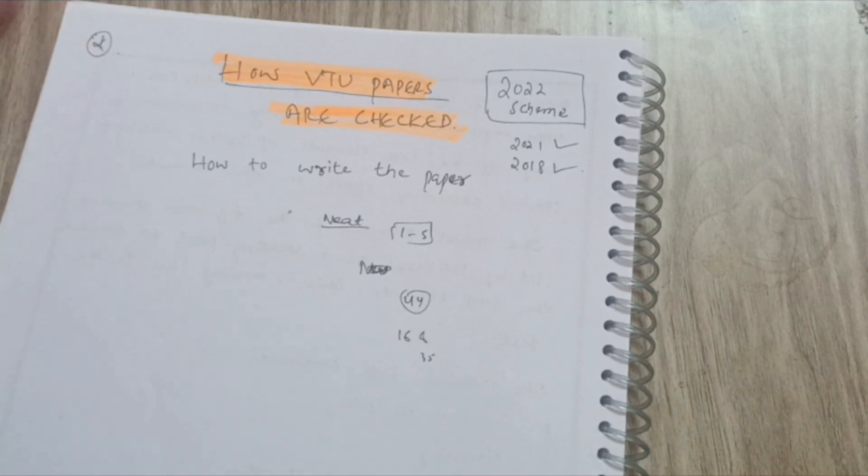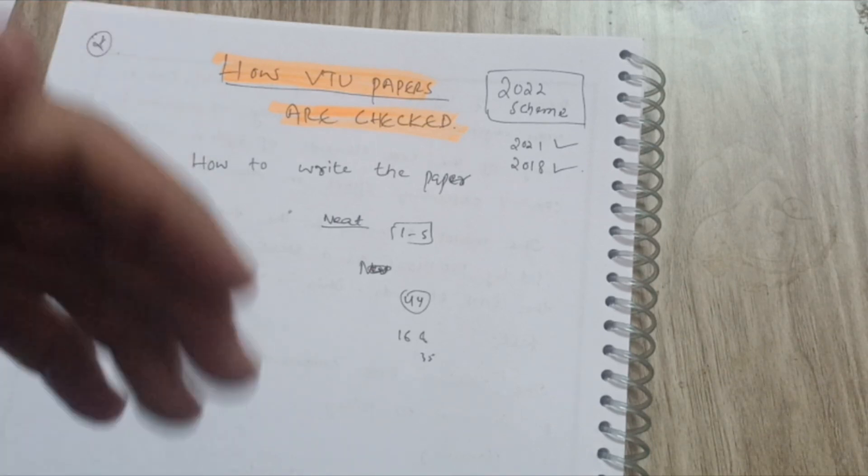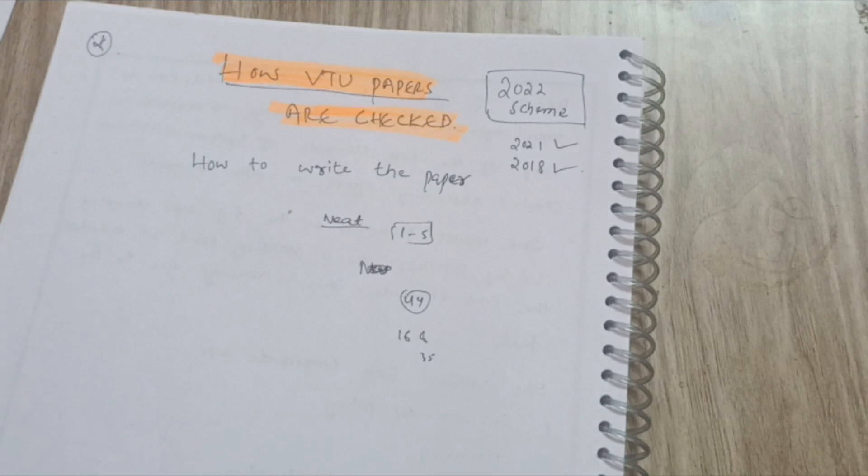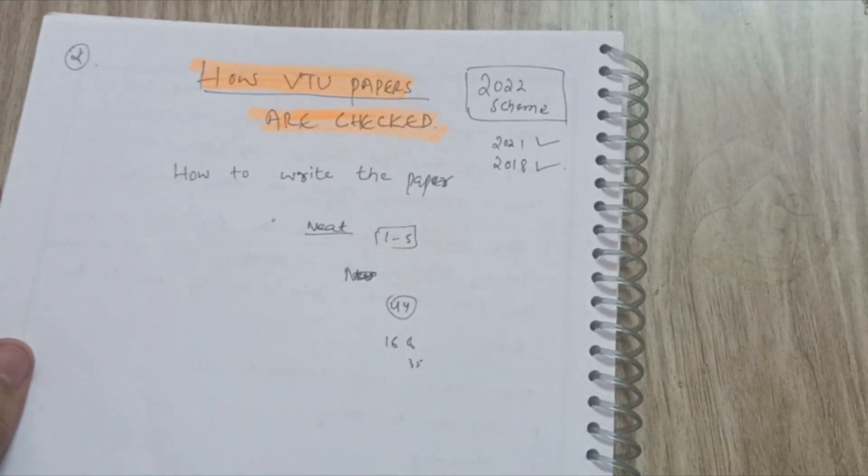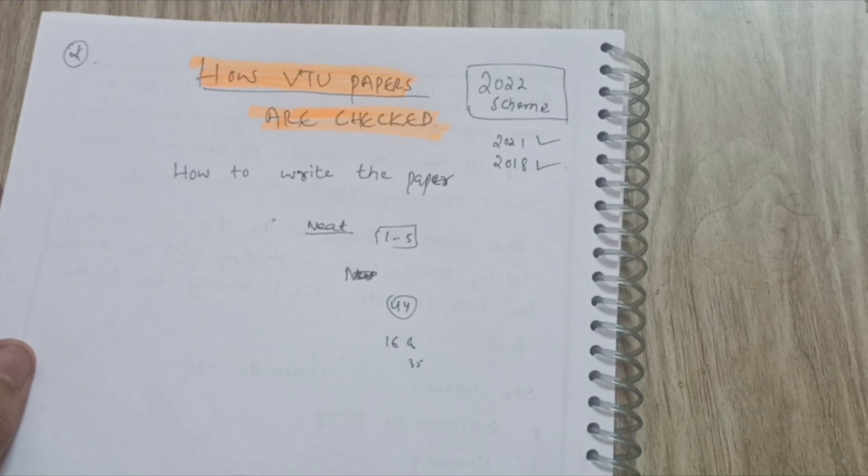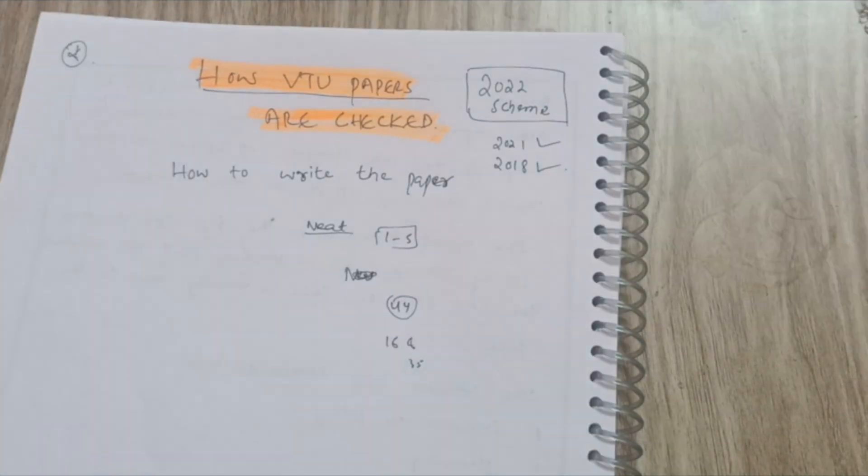Especially for the matrix part, most of the students think that matrix is the easier part, but they are always checking the answers. Most of the students are attempting the whole matrix, they are telling that I have attempted whole matrix, I should get 20 marks, but evaluators are checking the answers. So try to shuffle the questions so that it will be difficult for the evaluator to check the paper in that particular mentioned time, that is 15 minutes. This is the way of checking the papers.